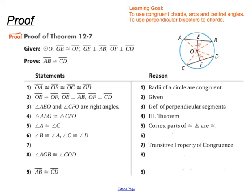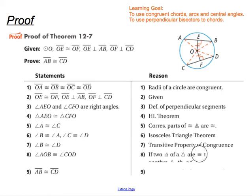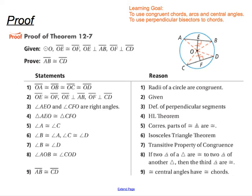Now looking at the larger triangles created by the radii and the chords: angle B is congruent to angle A, and angle C is congruent to angle D by the isosceles triangle theorem. By transitivity, angle B equals angle D. Since angles A and B in one triangle match C and D in the other, their third angles must be congruent by the third angles theorem. Since their central angles are the same, the chords must be congruent. That completes the proof of theorem 12-7.